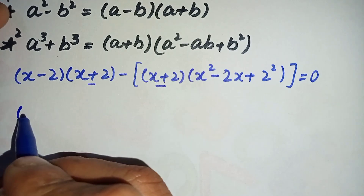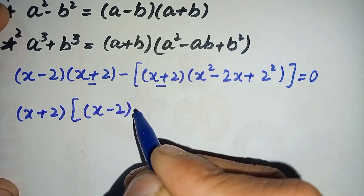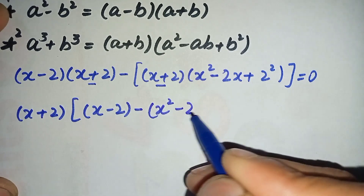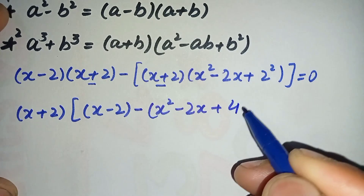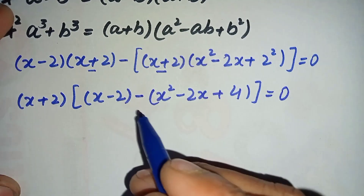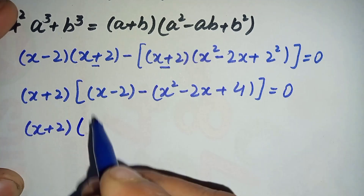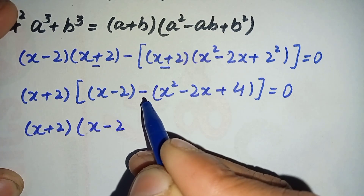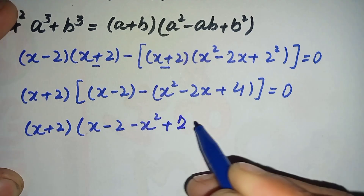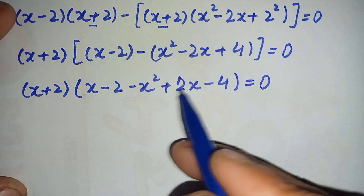Looking at this equation, we take (x plus 2) as a common factor from both terms. This leaves x minus 2 from the first term, minus (x squared minus 2x plus 2 squared) from the second term, giving us (x plus 2)(x minus 2 minus x squared plus 2x minus 4) is equal to zero.